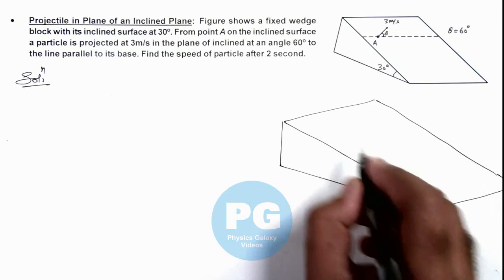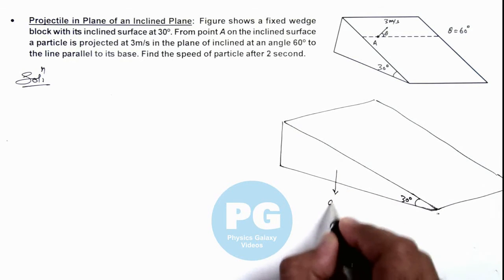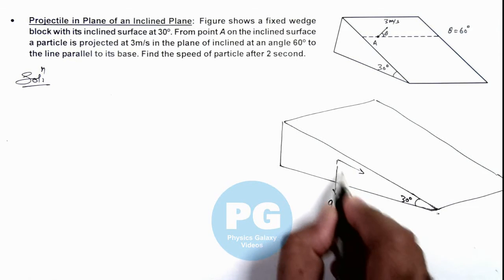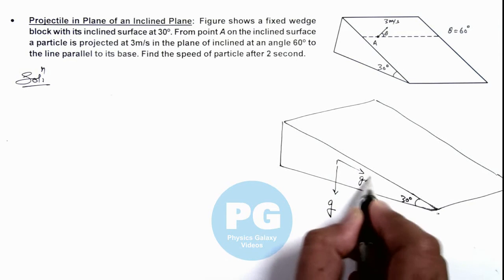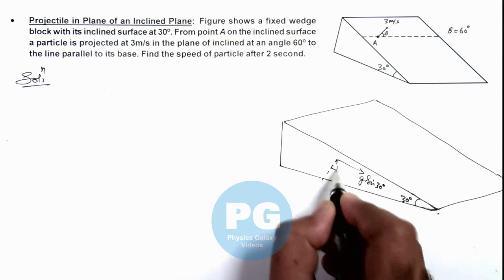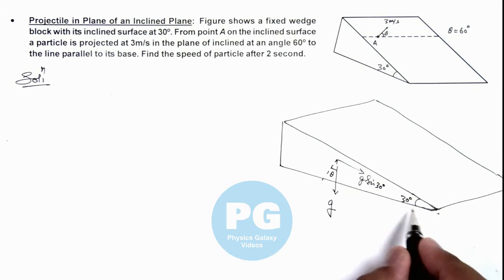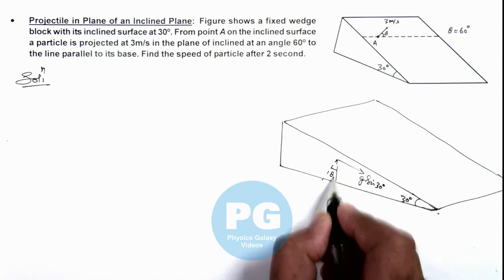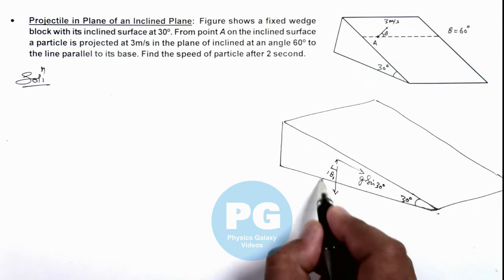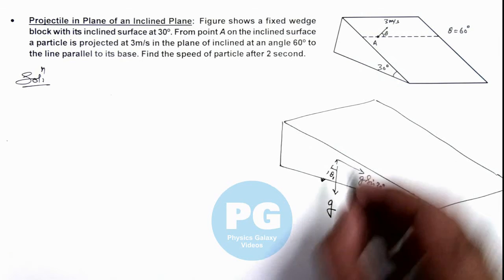On particle g acts in vertically downward direction, so along the incline the acceleration of this particle would be g sine 30 degrees, because the normal is having an angle theta which is 30 degrees, or this can be written as theta 1 because I have taken theta as the angle of projection.